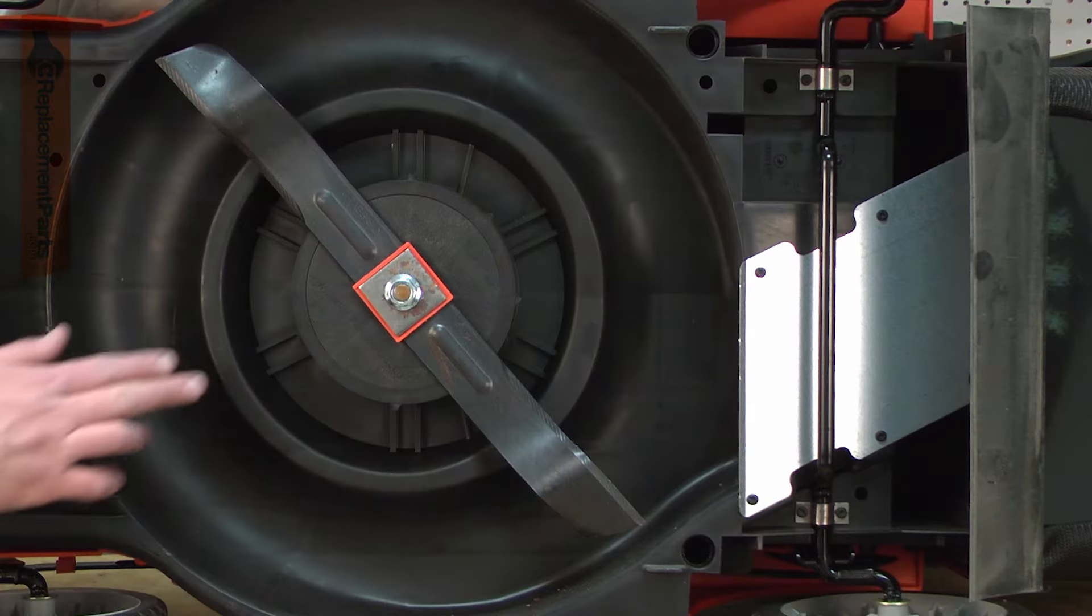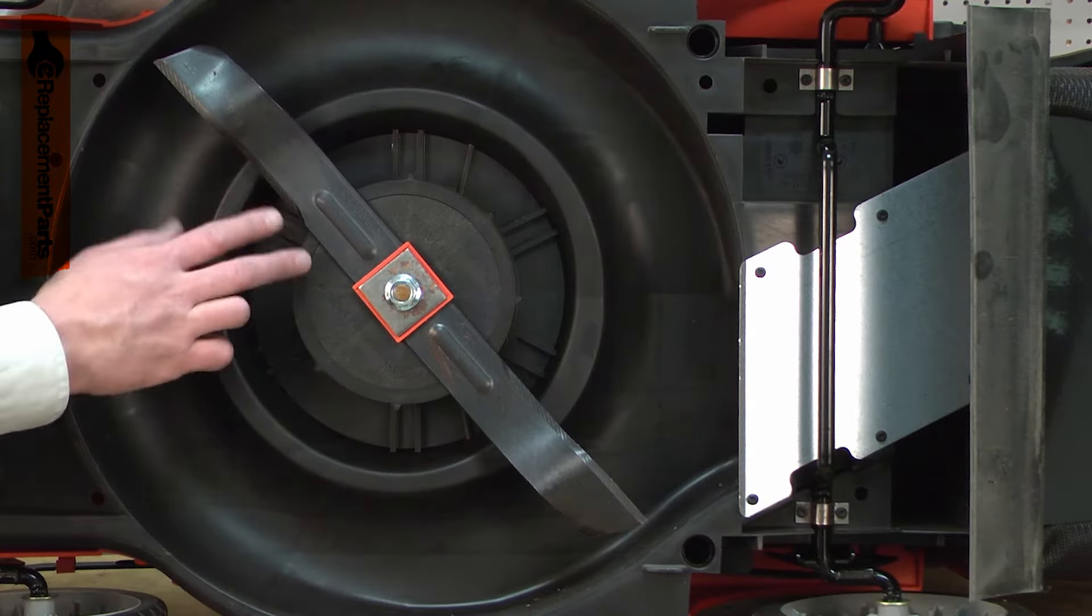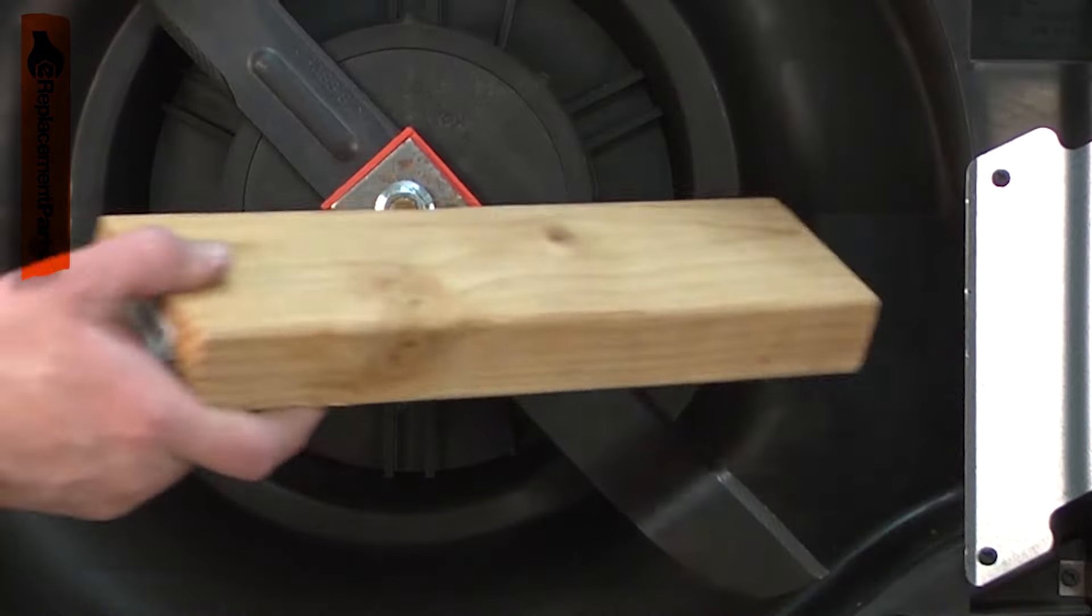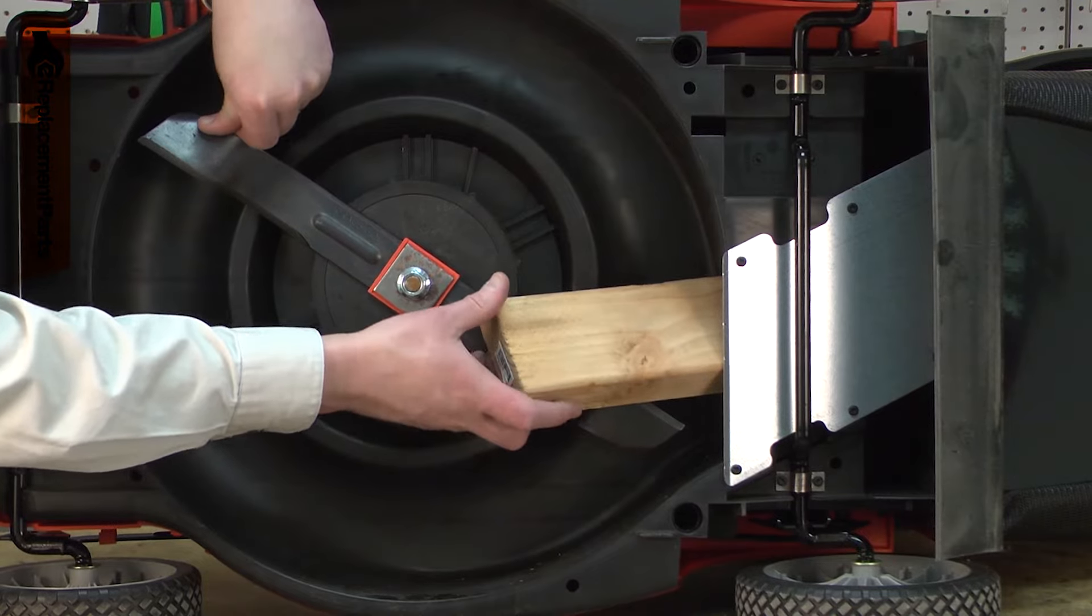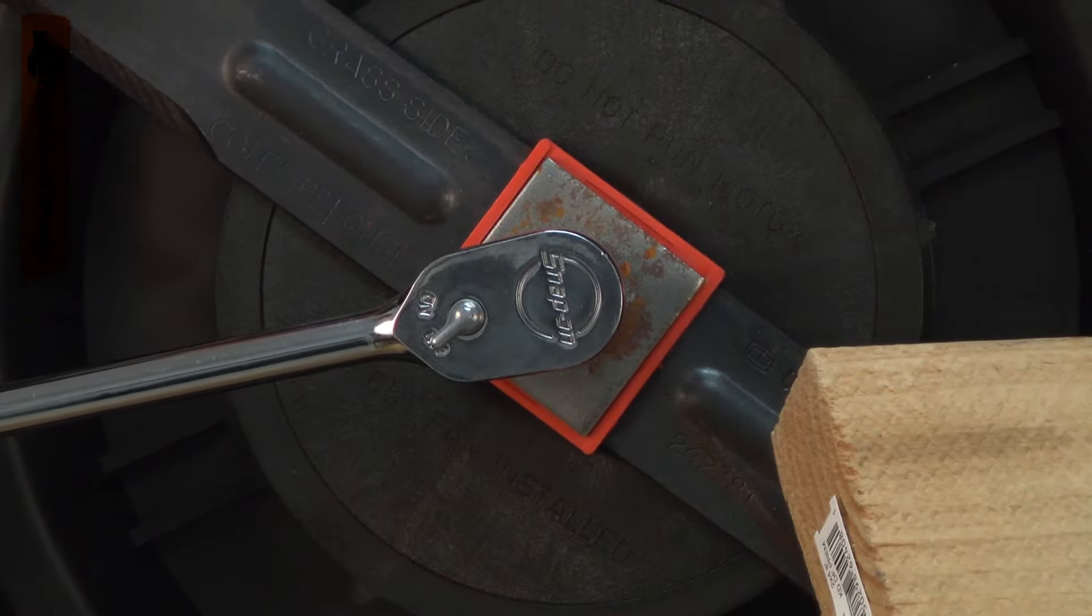I've tipped the mower on its side so I have access to the blade. It's held in place with this single nut. I'll bind up the blade with a piece of scrap wood, that way it can't turn while I'm rotating the nut. I'll use a ratchet wrench to remove it.